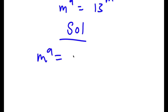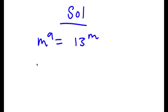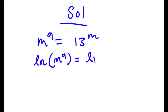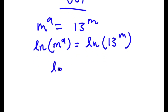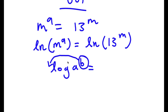We're starting with m to the power of 9 is equal to 13 to the power of m. What I'm going to do is take the ln on both sides. So now I have ln of m to the power of 9 equal to ln of 13 to the power of m. An important property of logarithms is that if I have log a to the power of b, I can move this exponent b to the front of the logarithm.